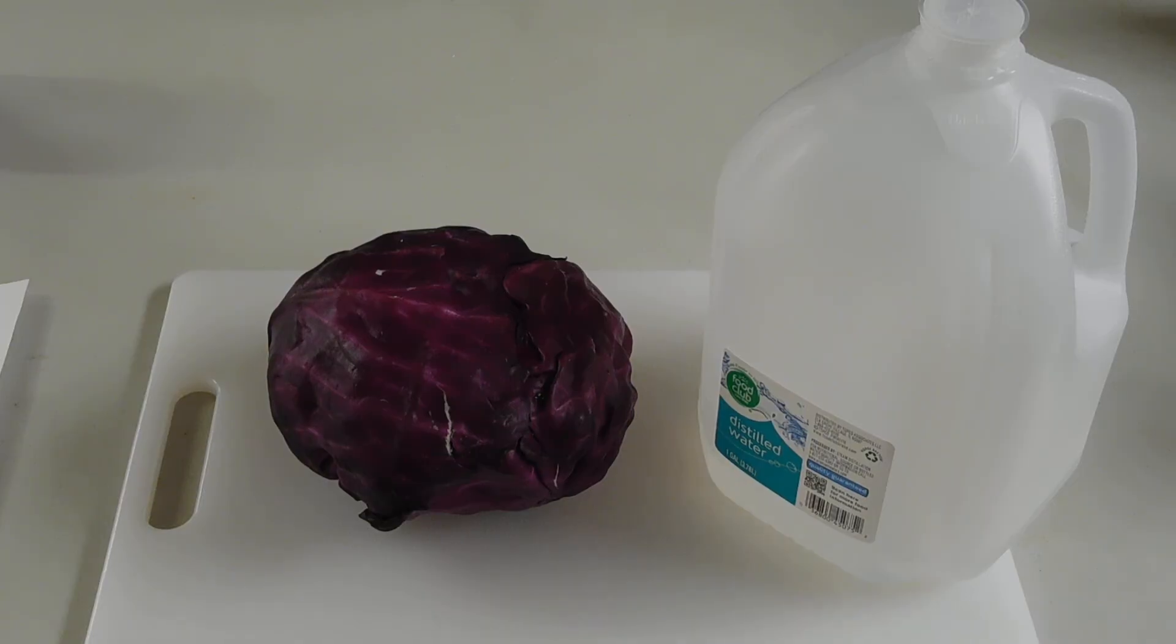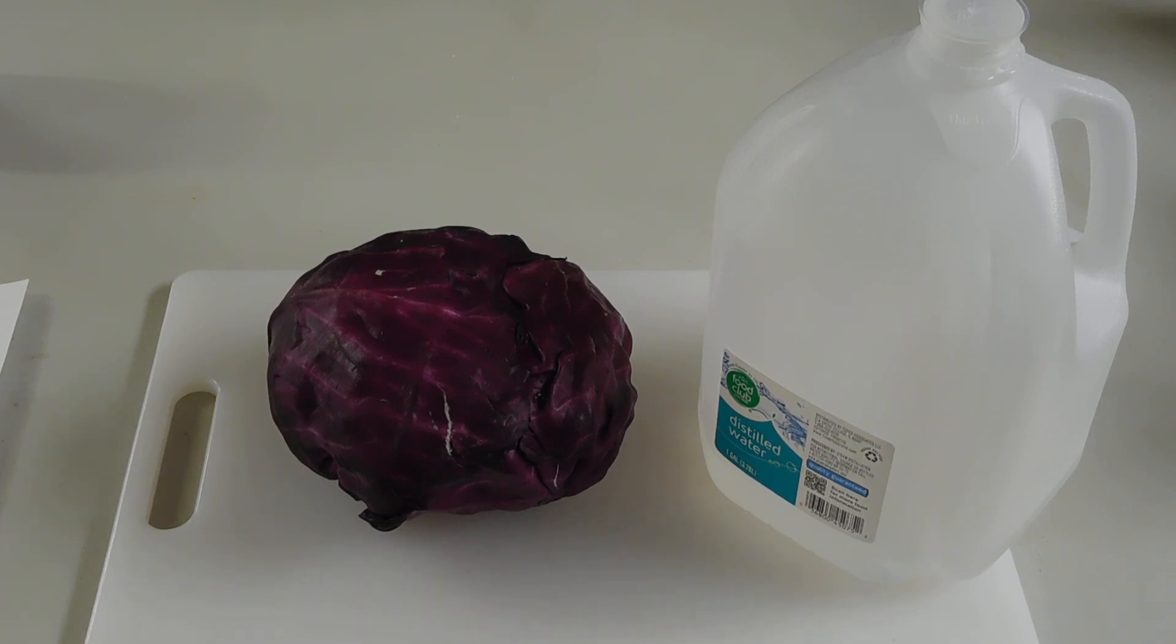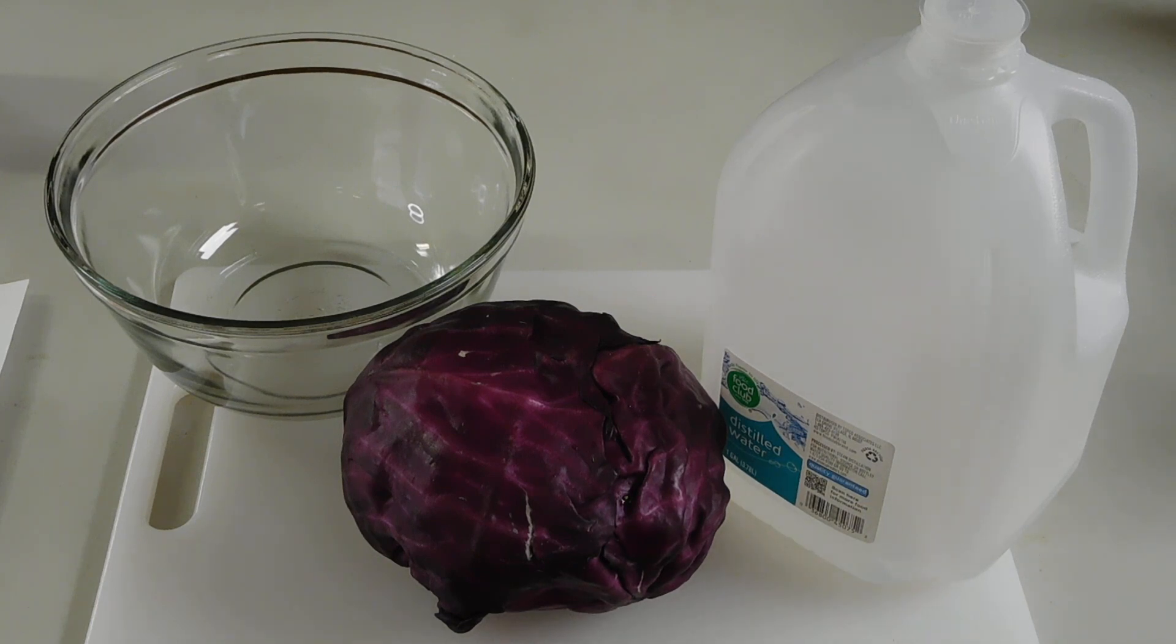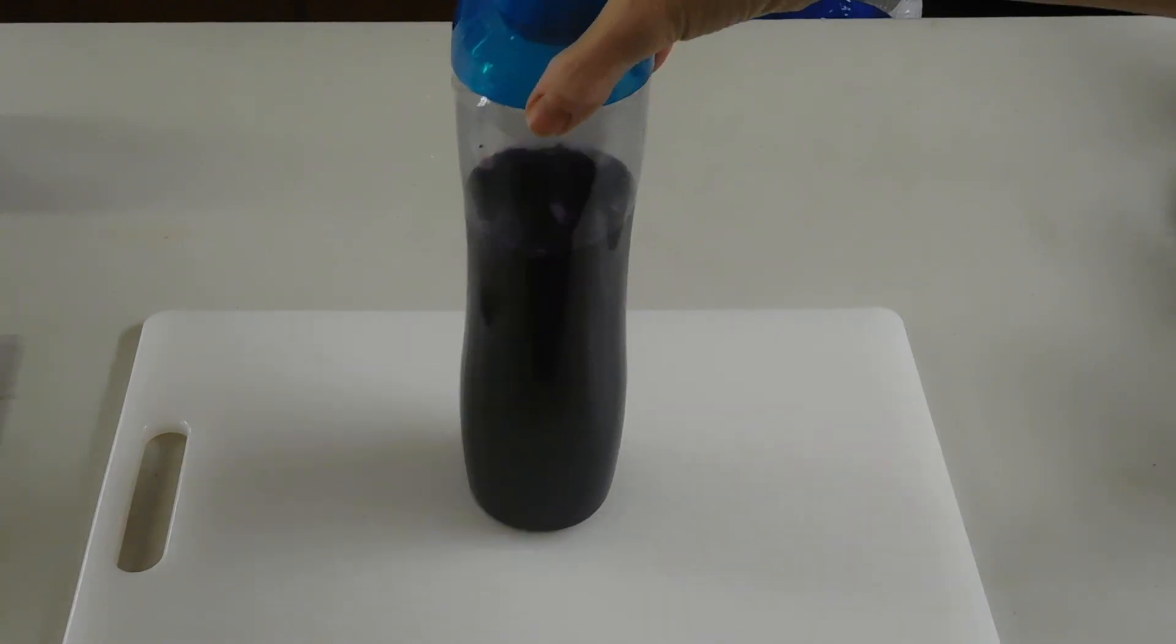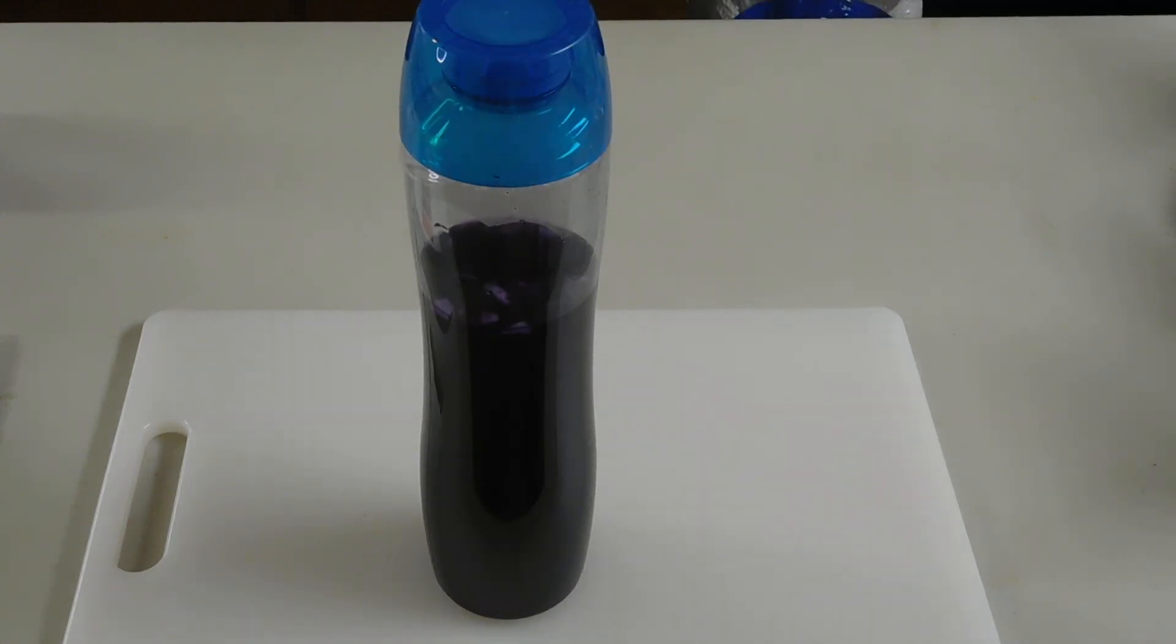So let's see how we make the indicator solution. To make the indicator solution, I used two things: I used a red cabbage and I used distilled water. The procedure for making the solution is pretty straightforward. I chopped up the red cabbage and put it in my large glass bowl. Then I got distilled water, I boiled about a quart of it, and I poured that over the red cabbage. Let that soak until the solution was cool. From that, I got this purple liquid, which we are going to use as our indicator solution.